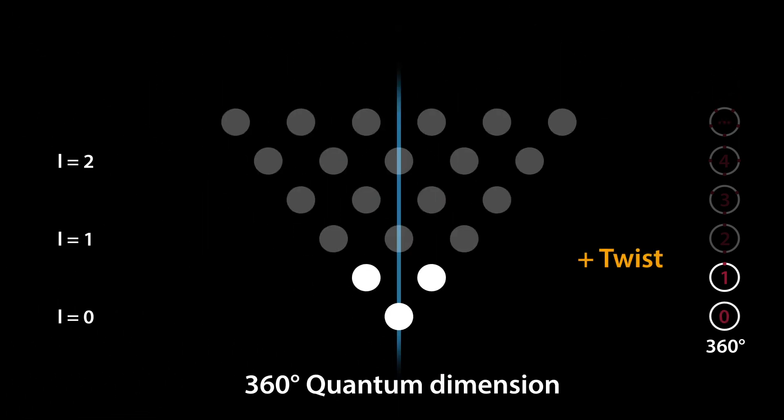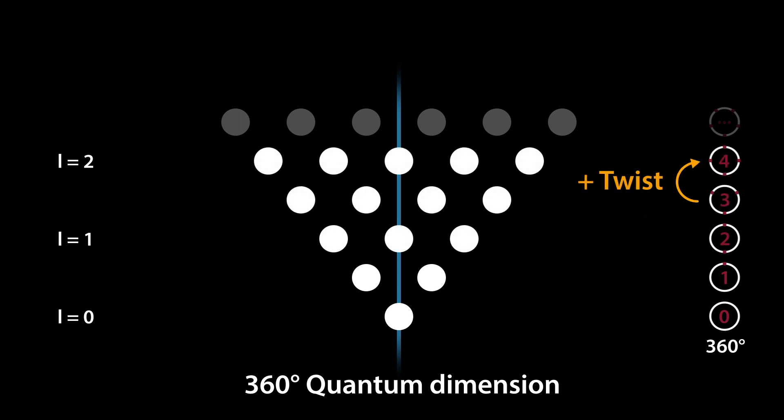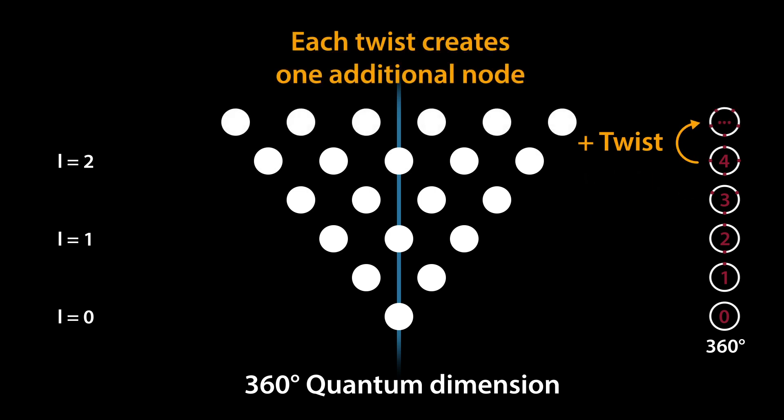If we repeat the cutting open, twisting, and gluing together operations, all other spin states can be constructed, starting with the state J equals zero, with trivial topology.